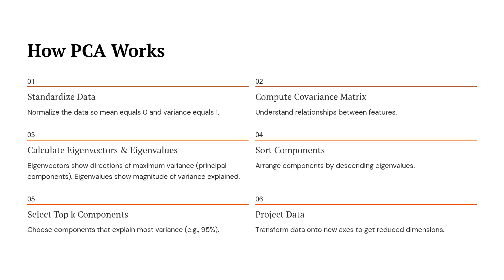Step 4: we sort the components by their eigenvalues in descending order so the most important components come first. Step 5: we then select the top k components — usually the ones that explain most of the variance, such as 95 percent. Step 6: finally, we project the data onto these new components to get the reduced-dimension dataset. This is how PCA reduces complexity while keeping the most important information from the data.